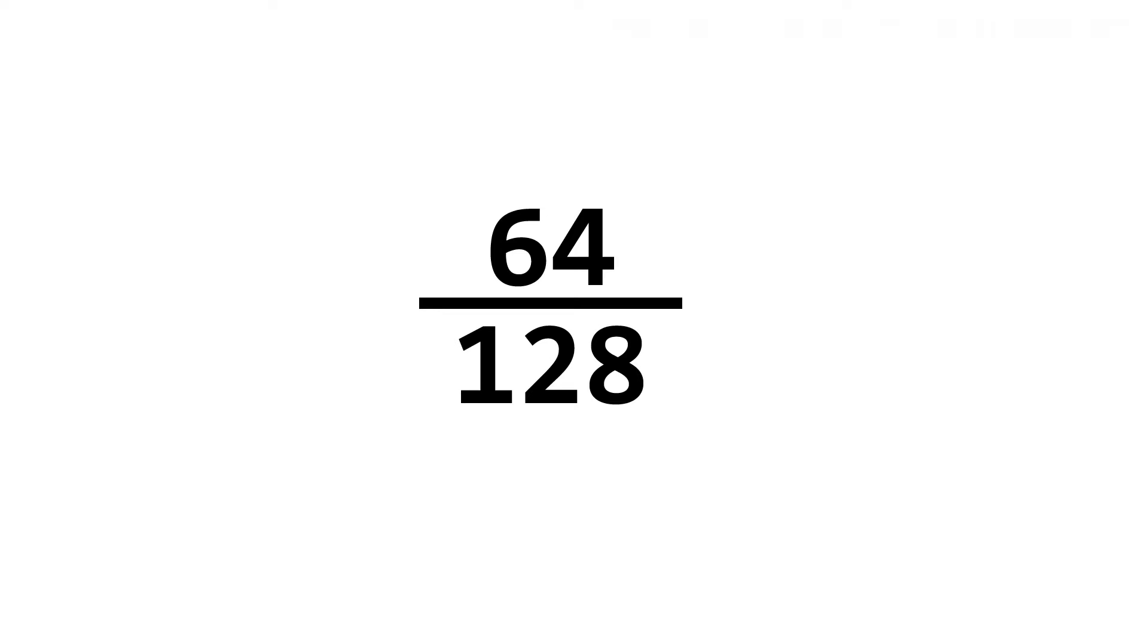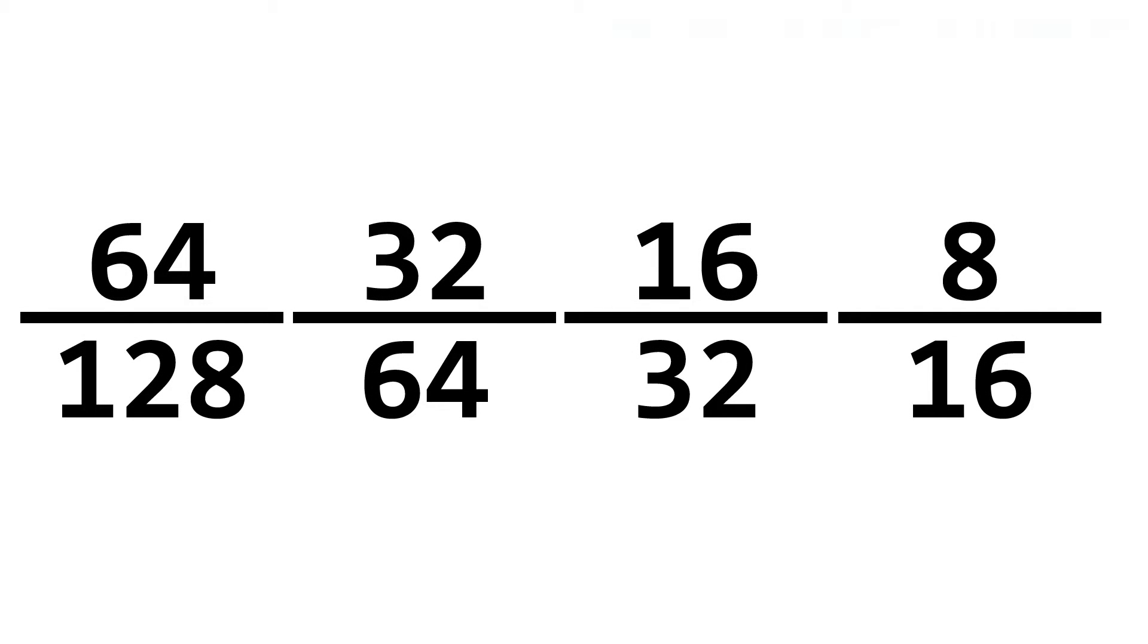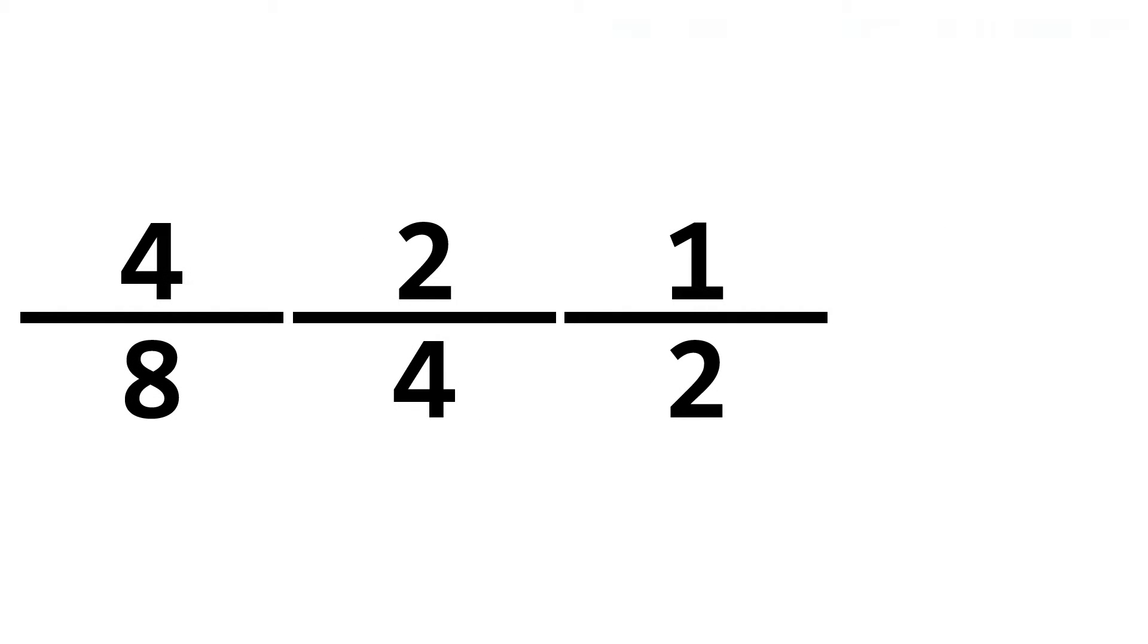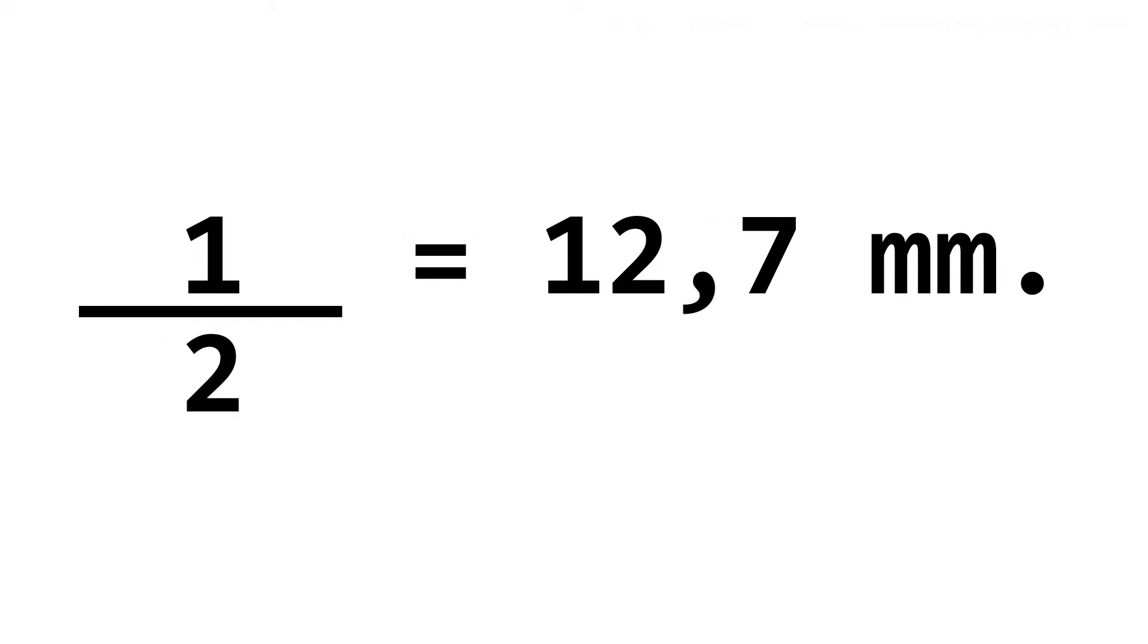Step 4: Finally we need to simplify the fraction to get a new irreducible fraction. 64/128 equals 32/64 equals 16/32 equals 8/16 equals 4/8 equals 2/4 equals 1/2. The latter value is an irreducible fraction. Using this procedure we have found that 12.7 millimeters is equivalent to 1 half inch.